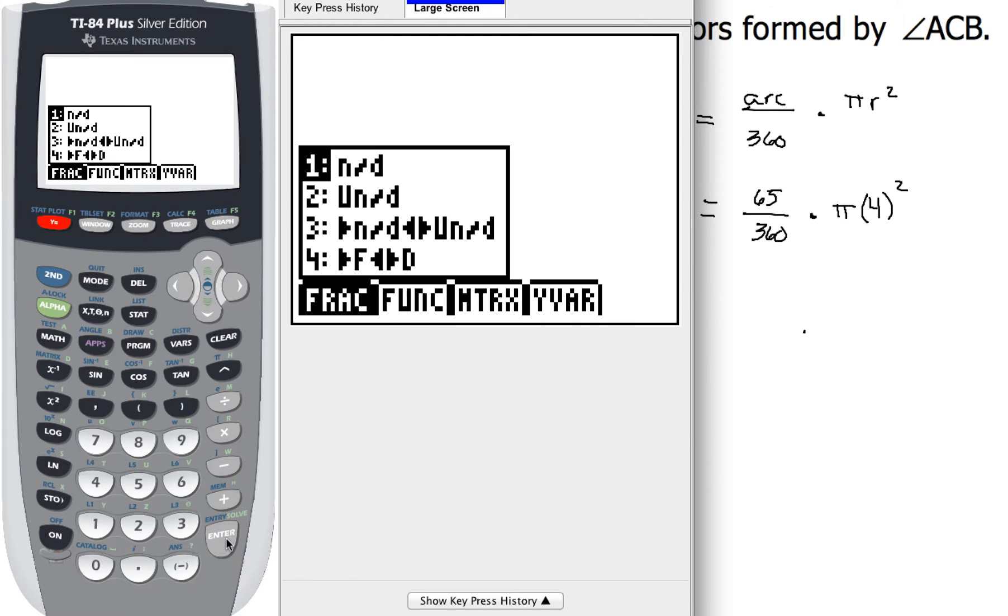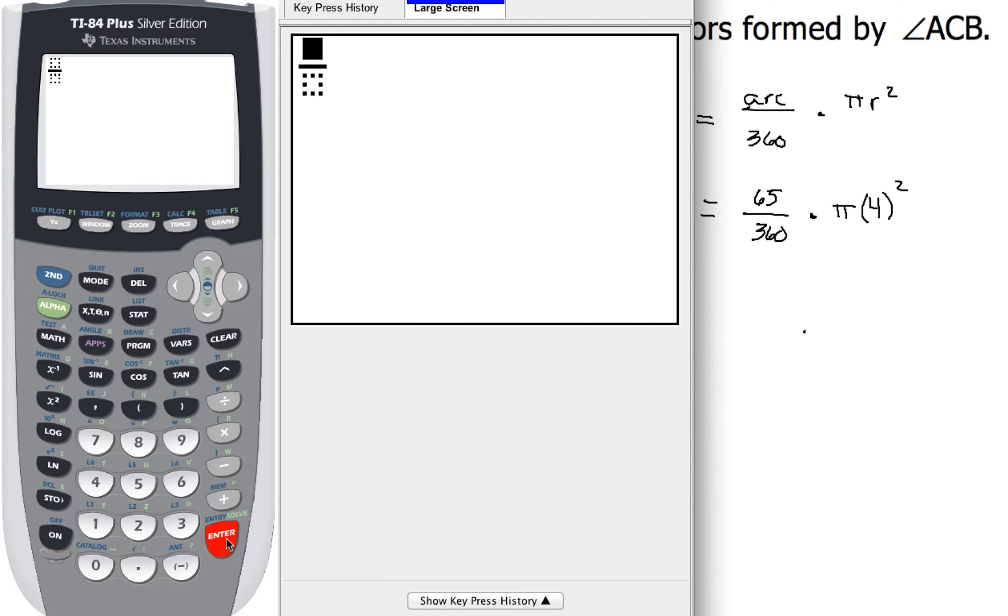So we're going to go back to our home screen here. So second mode. And then what I want you to do is hit alpha and then y equals. Now notice our first choice here is nd. So that means numerator denominator. So if I hit that, check this out. It's going to be a fraction. So I'm going to type in 65 on top and then I'm going to type in 360 on the bottom. And see what I like about this? It actually looks like that fraction. Now to get out of that fraction, I'm just going to arrow to the right of it. So there's the 65 over 360 part. Now for the pi, I'm going to kind of leave that out of it right now and we'll come back to that in a minute. But 4 squared, I kind of know what that is, but just in case, to make sure I don't mess up, I'm going to type in 4 and then my little squared button, which is right over here by the 7, diagonally from the 7, I'll go ahead and hit that.